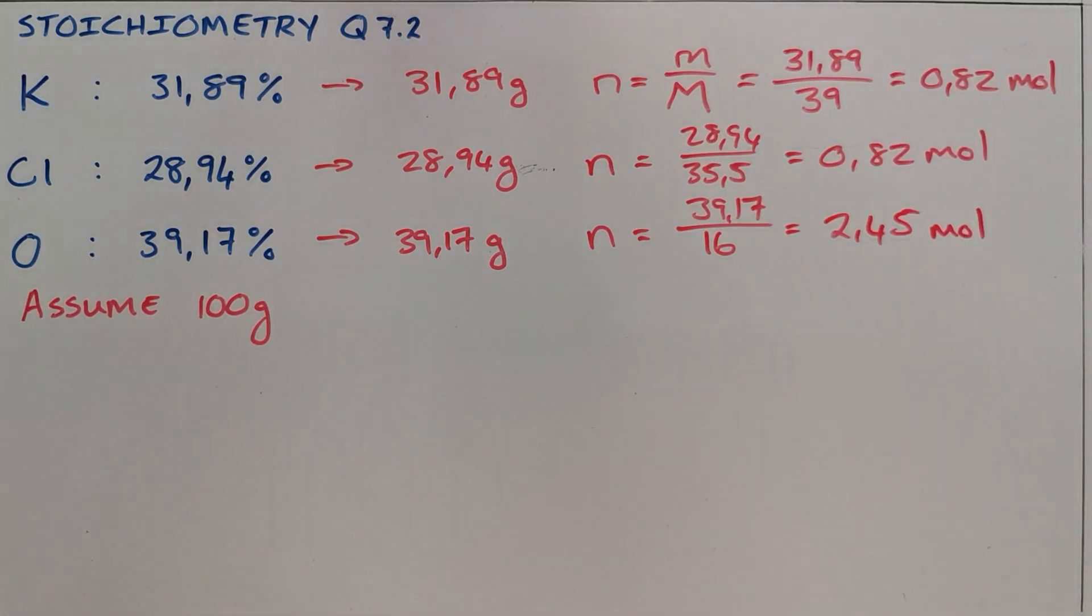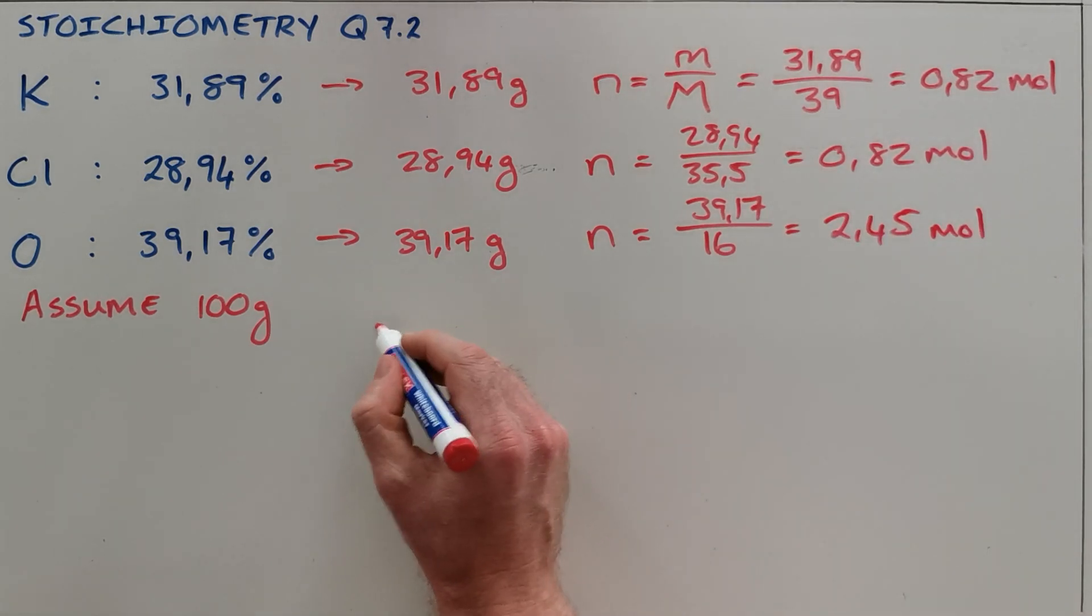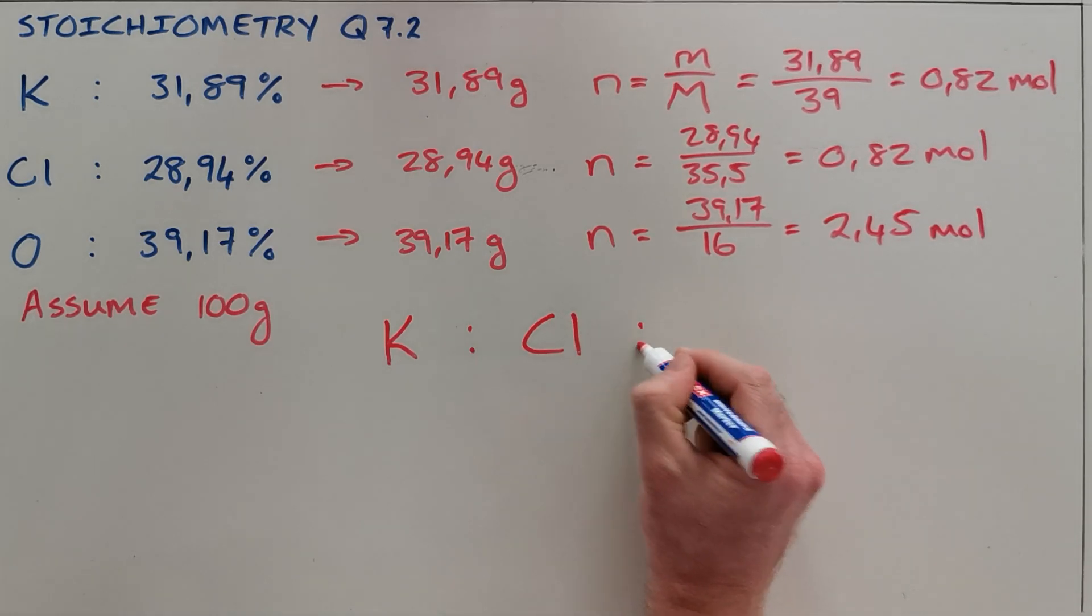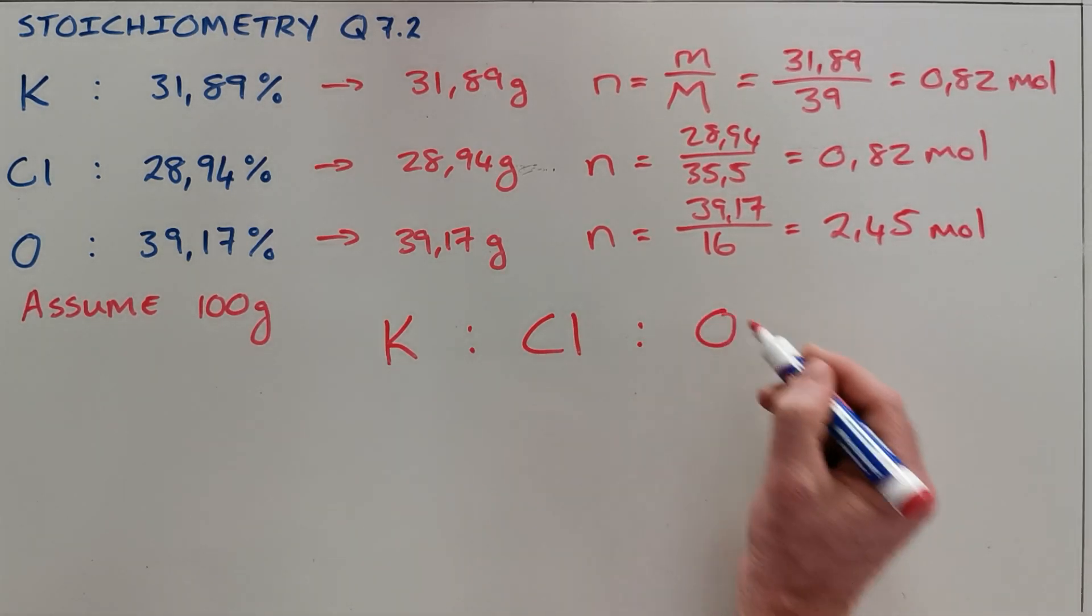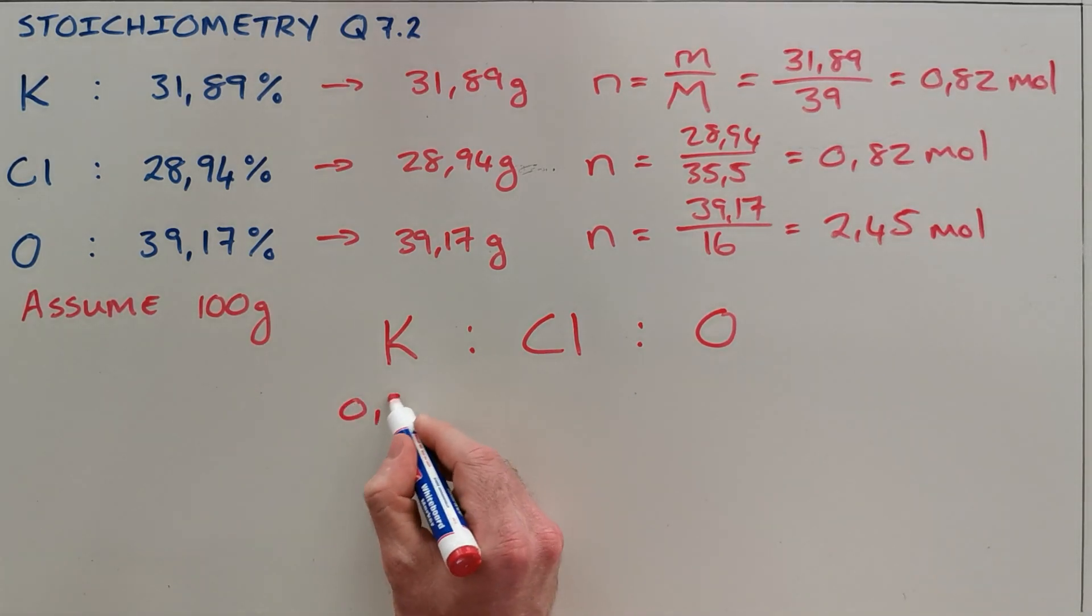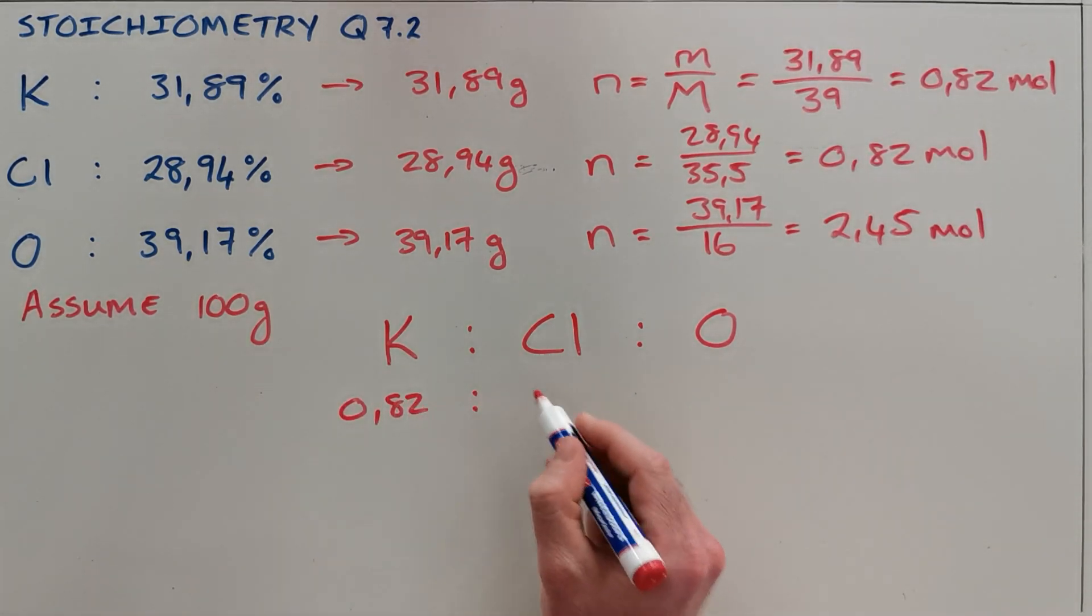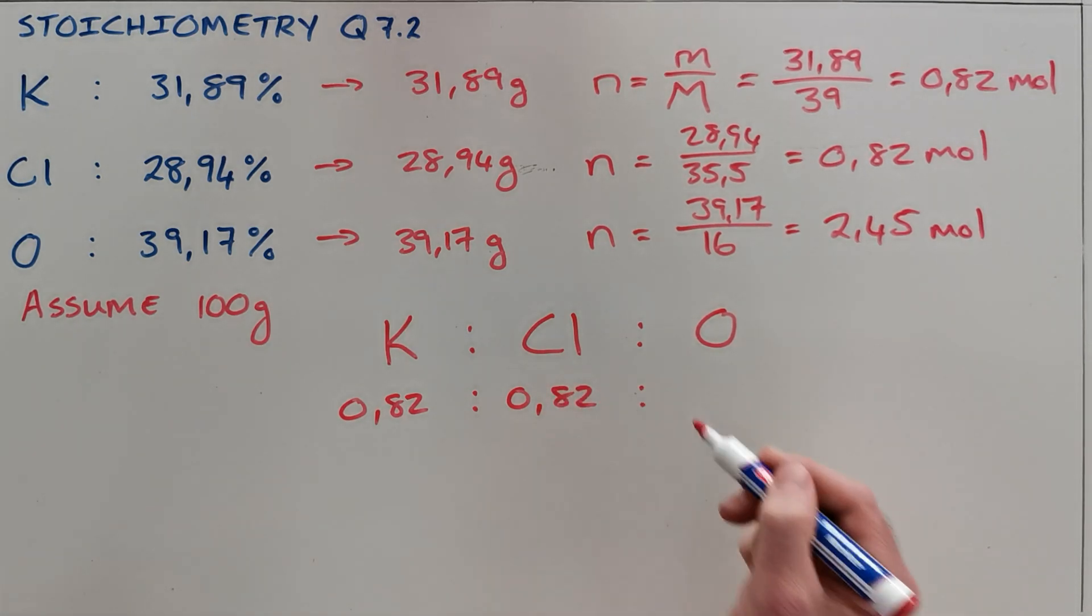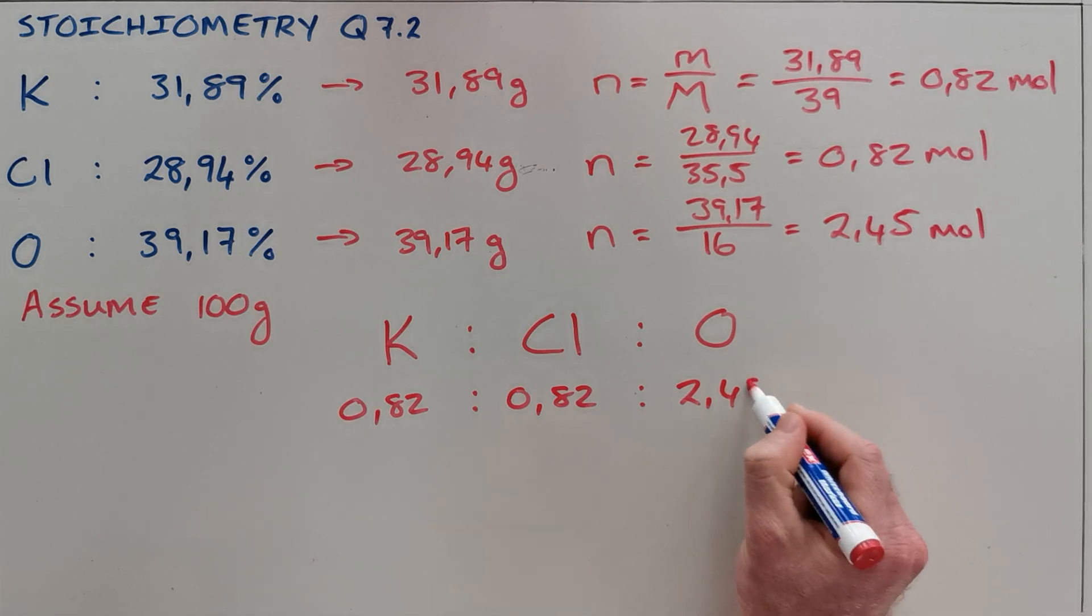Once we have that, we can use those numbers of moles to calculate the ratio in this compound. This compound is made up of potassium, chlorine, and oxygen combined in a ratio of 0.82 moles of potassium to 0.82 moles of chlorine to 2.45 moles of oxygen.